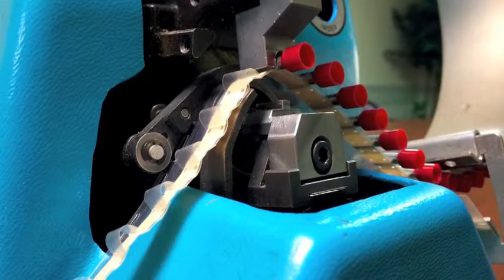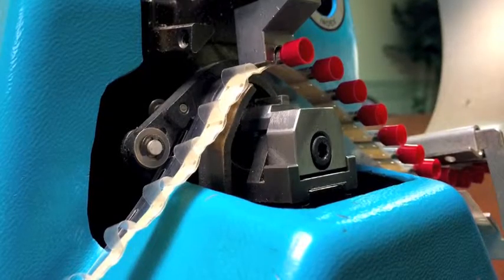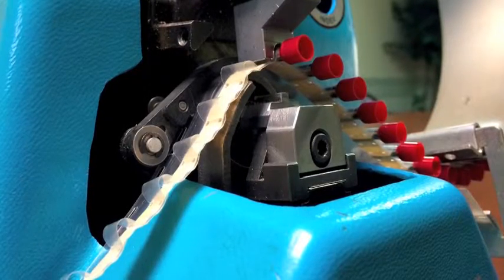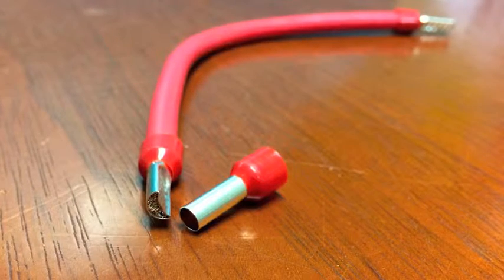The H270 can crimp tape-mounted 26-gauge through 8-gauge ferrules. We have another machine that can crimp up to 4-gauge tape-mounted ferrules. The machine can also be used for crimping twin ferrules.